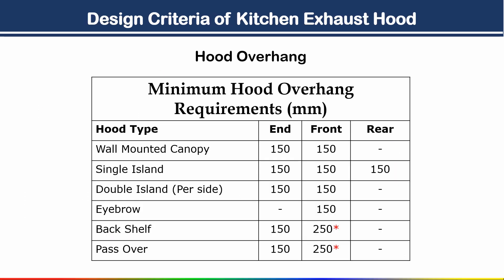Now let's see the design criteria for hood overhang. For a wall-mounted canopy hood, the minimum overhang requirement on the end (sides) is 150 mm (6 inches) and in front minimum 6 inches; for full capture, 300 mm in front. Similarly, overhang values are provided for single island, double island, eyebrow, back shelf, and pass-over type hoods as well.